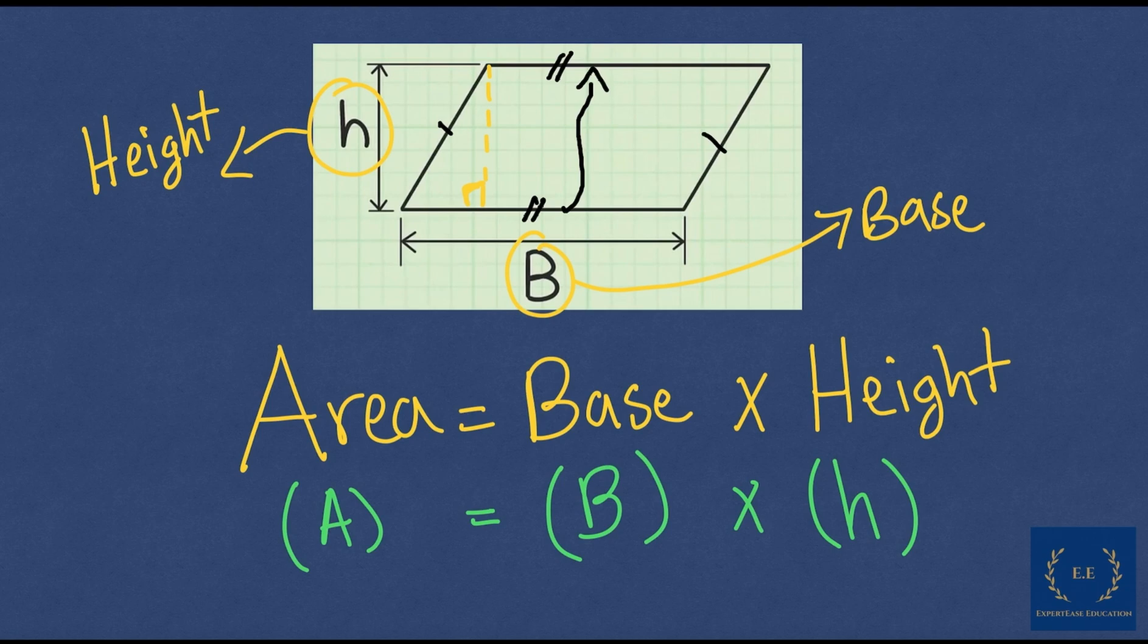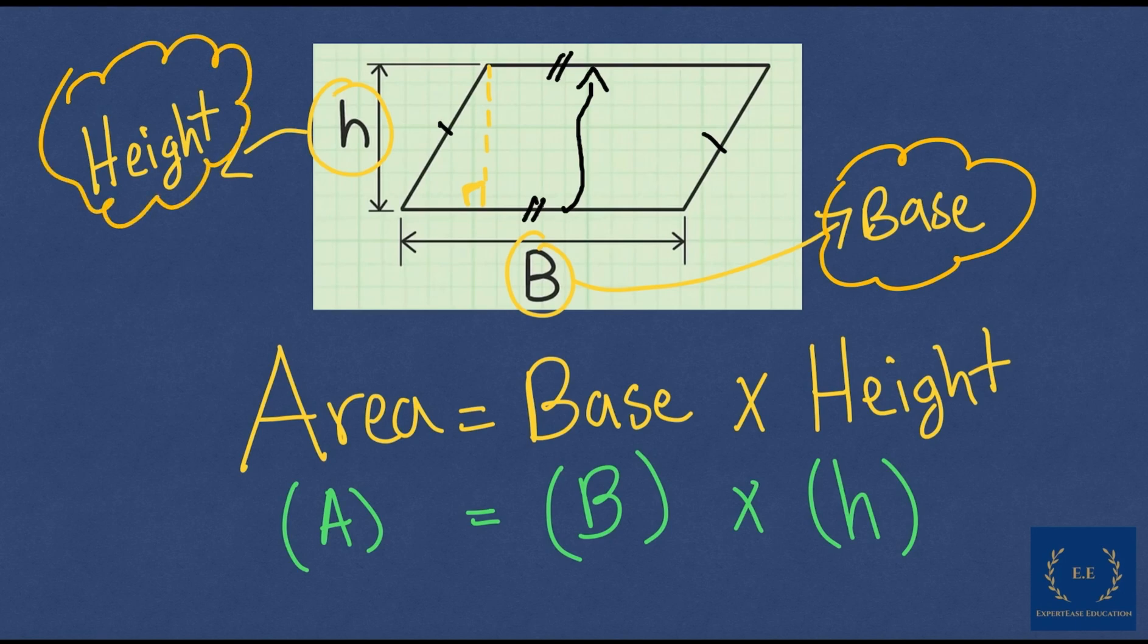We're going to give the height the letter H. The base of a parallelogram is the letter B and the height is the letter H, where the base is the long side that we rest our parallelogram on and the height is how far we need to go upwards in order to find the other parallel side.